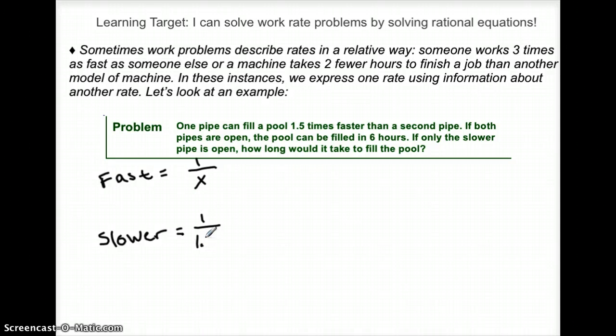So then that means since the slower pipe is 1.5 times slower than the fast pipe, my slower pipe's rate is going to be 1.5 times the fast pipe, x. And so whatever I plug in for x in the slower pipe, I'm going to multiply it by 1.5, which would make the number bigger.